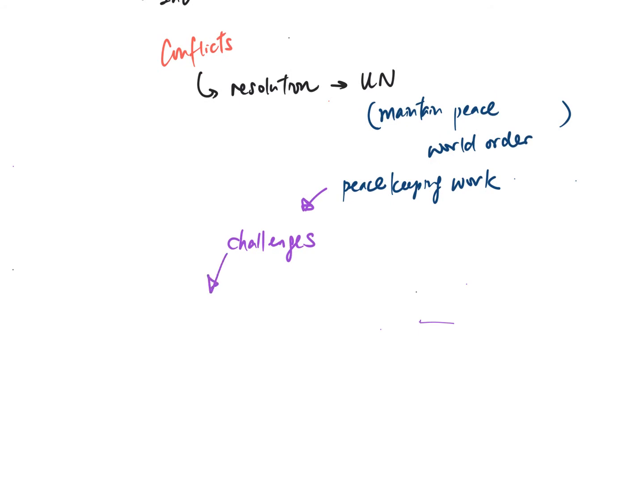So the first one is in terms of army. So one thing we understand actually UN do not have the independent army. There's none. So this leads to one of the problem.